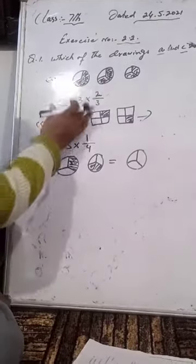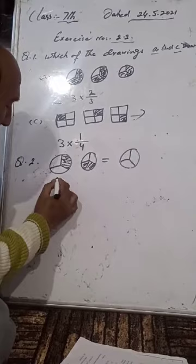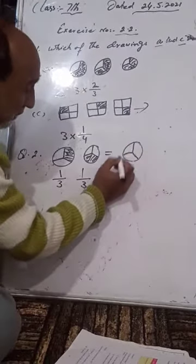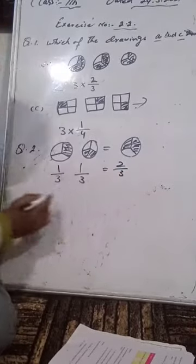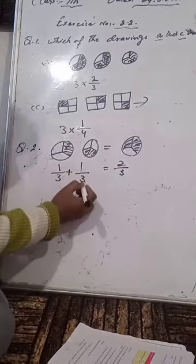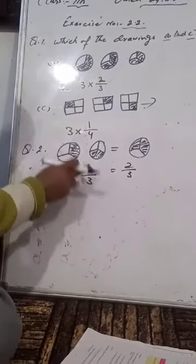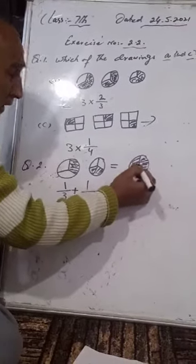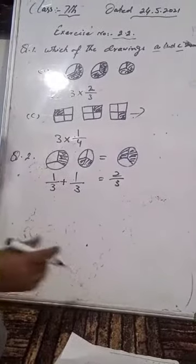If you understand the first question, then you can also solve these yourself. If we add these two circles, we will add 1/3 plus 1/3, which will be equal to 2/3. Adding all three circles gives us 3/3, which equals 1.